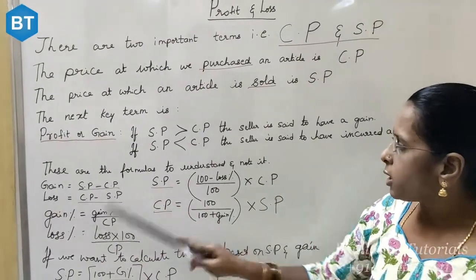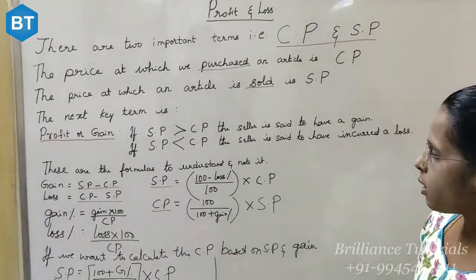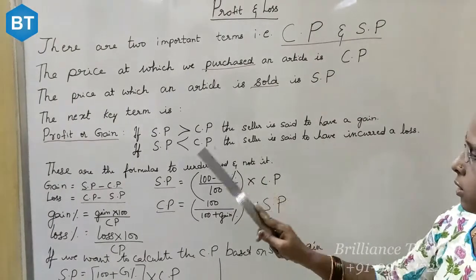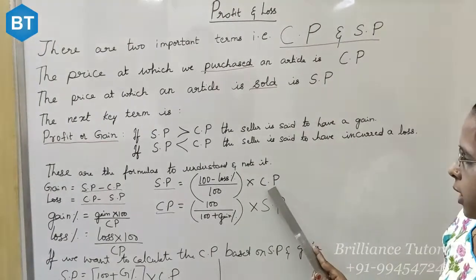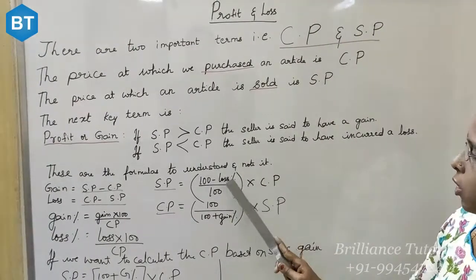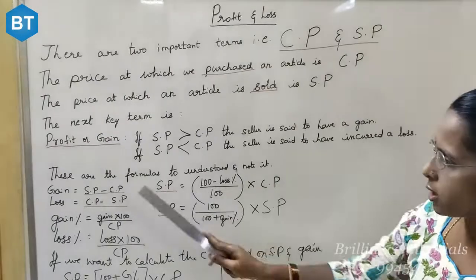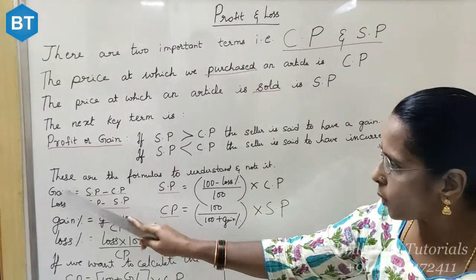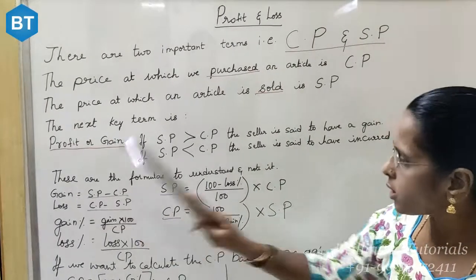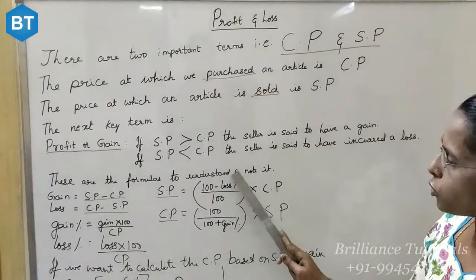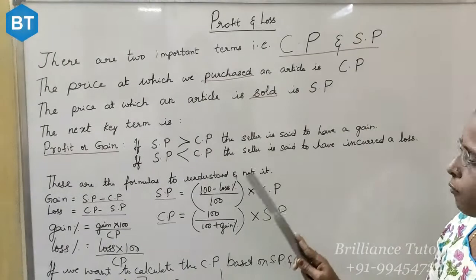The next one is when they have given the cost price and the loss percentage — not just the loss. There is a difference between gain, loss, and the loss percentage. We have to clearly understand this.